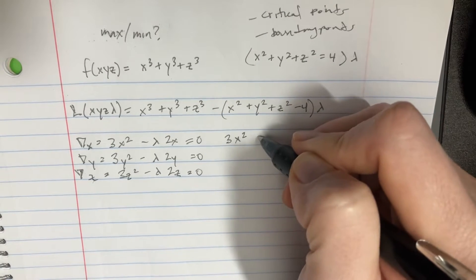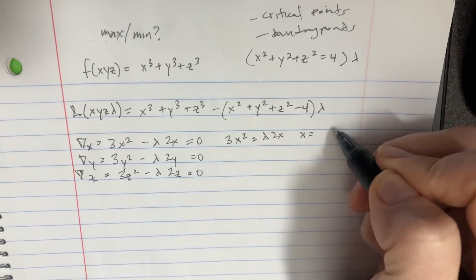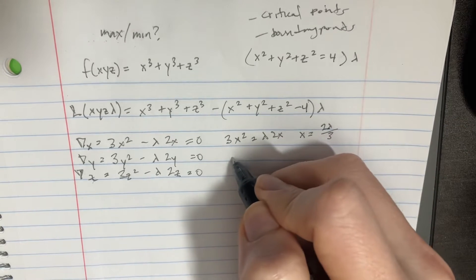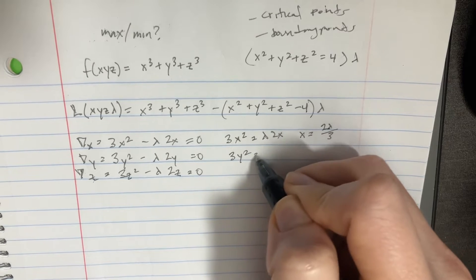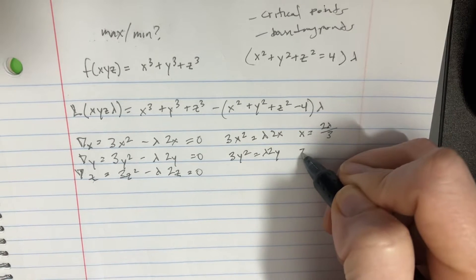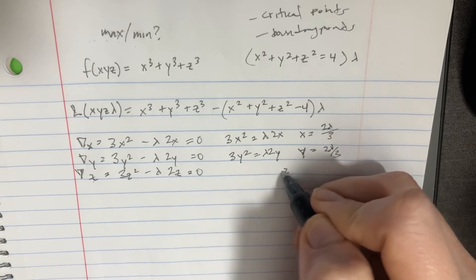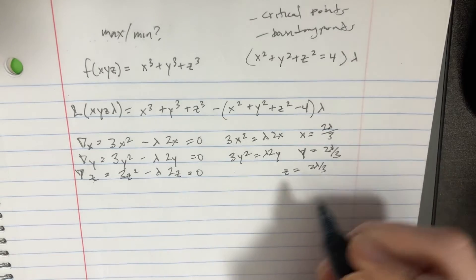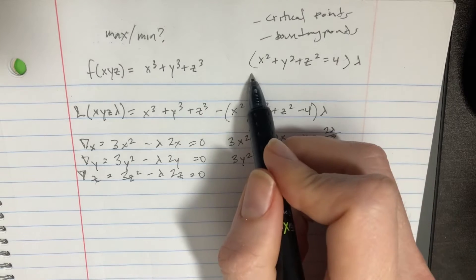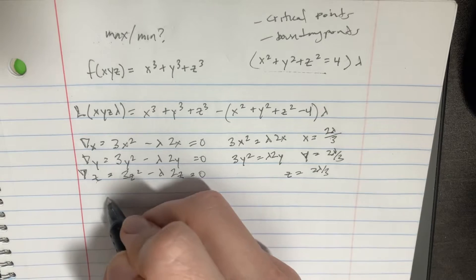Solving for x from 3x² − 2λx = 0 gives x = 2λ/3. The equations for y and z are identical in form, so y = 2λ/3 and z = 2λ/3 as well. Now we need to determine what λ is.